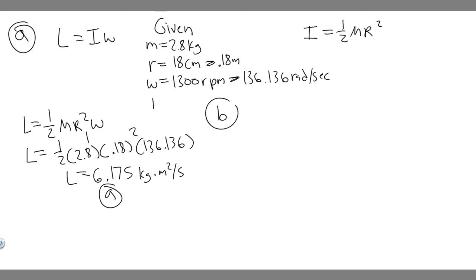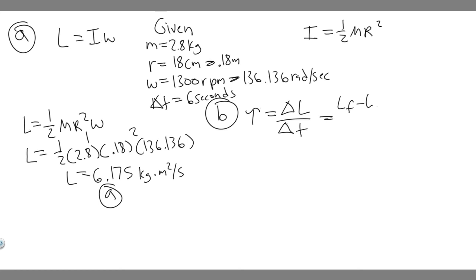Now let's move on to part B — finding the torque required to stop it in 6 seconds. The equation for torque is tau equals the change in angular momentum over the change in time. The change in time is 6 seconds. The change in angular momentum is L final minus L initial.